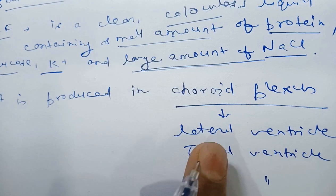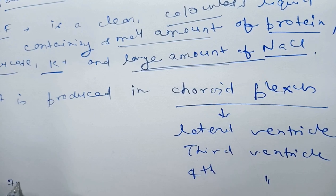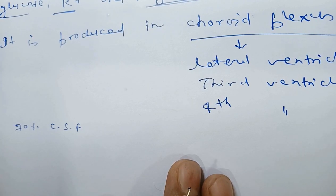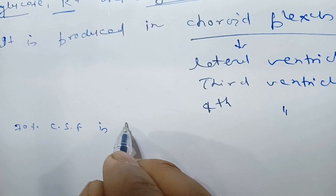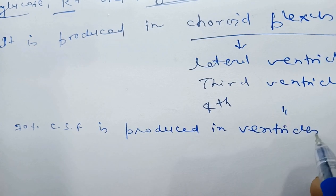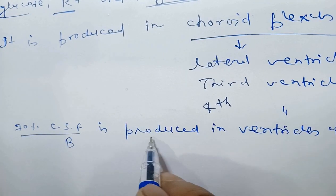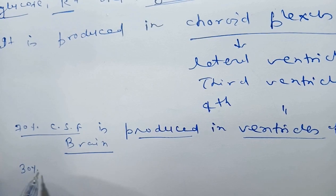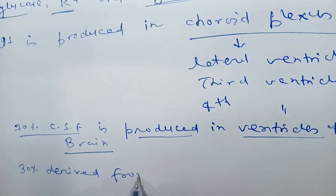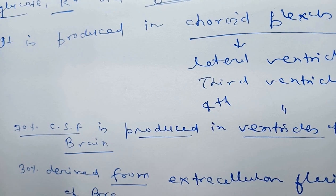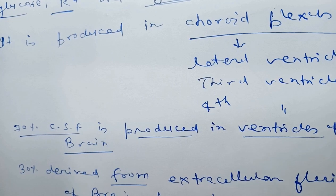But not all CSF is produced in the ventricles. About 70% of the CSF is produced in the ventricles of the brain, and 30% is derived from the extracellular fluid of the brain parenchyma.